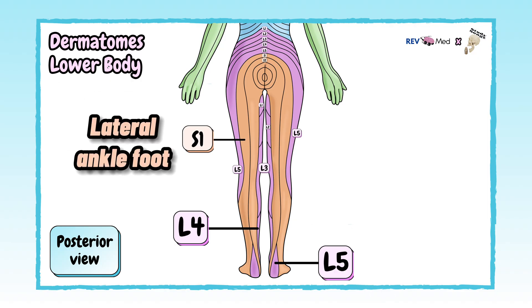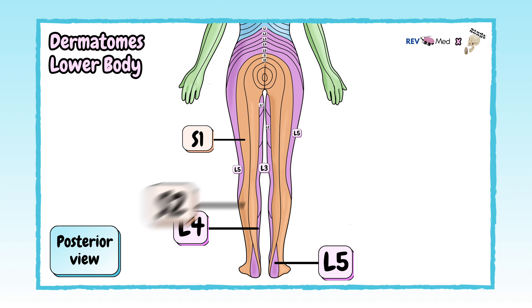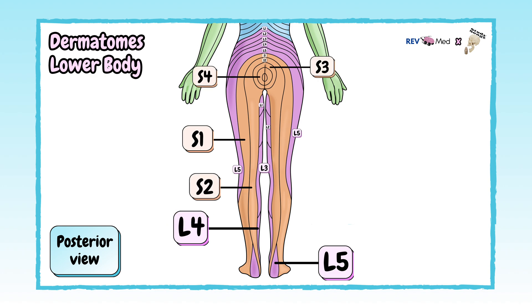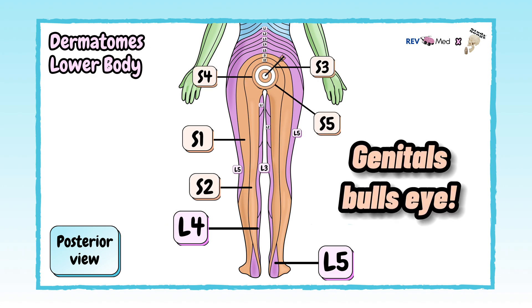L5: dorsal foot. S1: lateral ankle and foot. S2: posterior leg. S3–S5: genitals, bullseye.